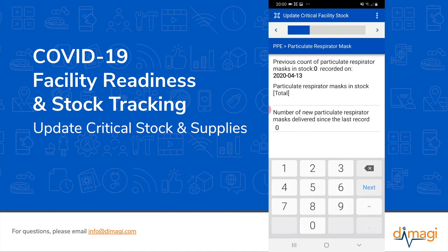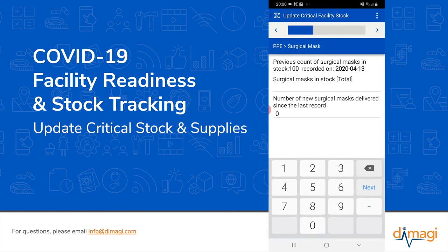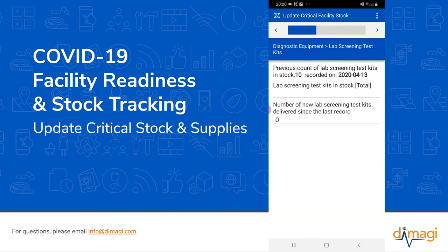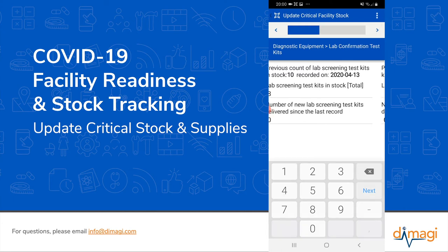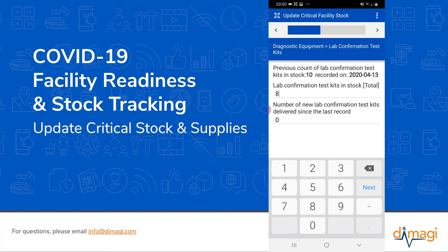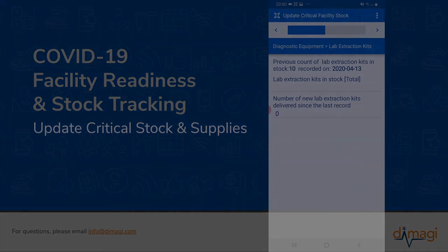We continue on — particle respirators are still zero in stock. Surgical masks have changed: we're down to 40, and this alerts us that we are into one day's worth of stock remaining. We would continue on and complete this stock list, but for the sake of this demo and to save some time, I will not complete this form.